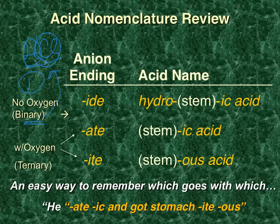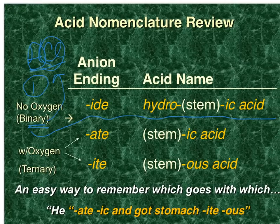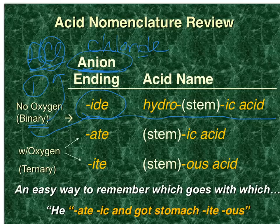The rules used for naming a binary acid are different than the rules for naming other ones. If the anion that makes up the acid ends in '-ide' — for example, chloride — the acid name is given as follows: in a binary acid, you always start the name with the prefix 'hydro', and you will always end it with the suffix '-ic'.